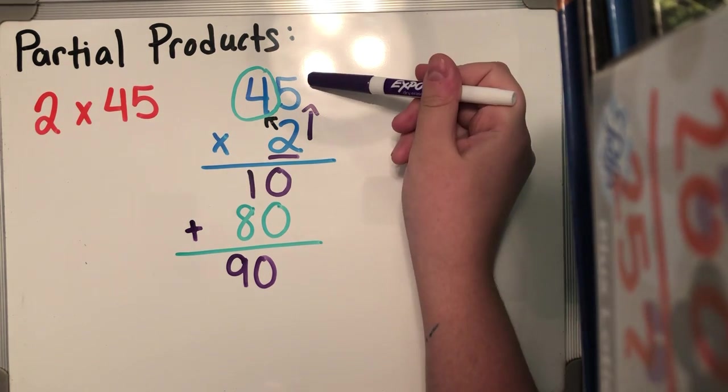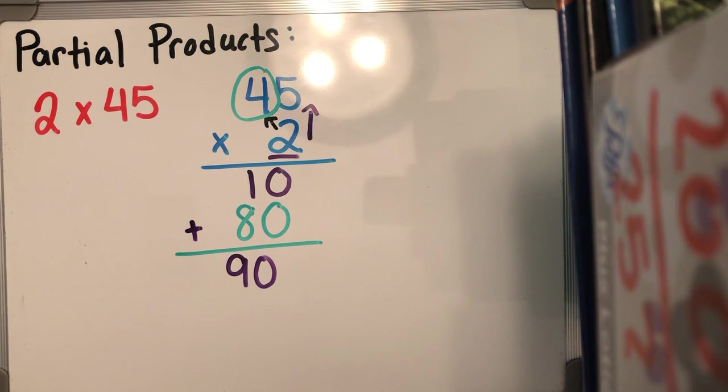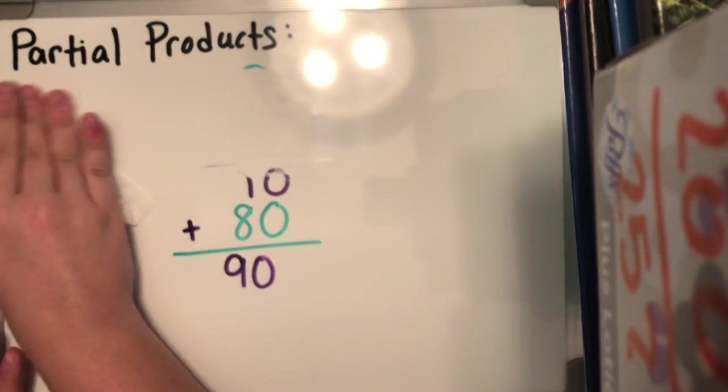Always remember that this is the ones place value and this is the tens. So it's no longer two times four, it's two times 40. But let's keep moving on. Let's try another problem.